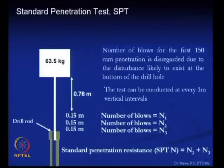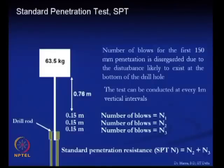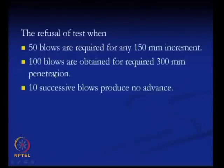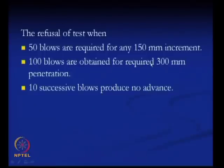This test can be conducted at every 1 meter interval, sometimes at 0.75 meter interval, or increased up to 1.5 meter interval. The test is called a refusal when: 50 blows are required for any 150 mm increment, or 100 blows are required for 300 mm penetration, or 10 successive blows produce no advance. If any of these three conditions are observed in the field, the test is considered a refusal.